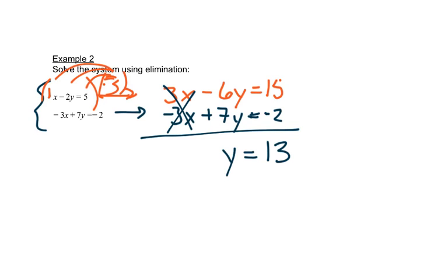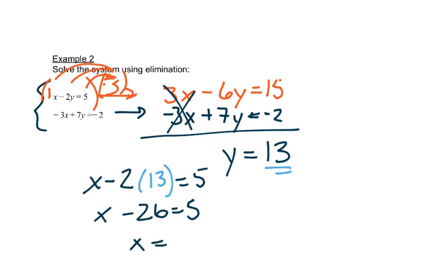So now I'm going to use that y equals 13 back in either one of my beginning equations. It looks to me like maybe the first one's a little bit easier. So I would have x minus 2 times 13 equals 5. So I'd have x minus 26 equals 5. Add 26 to both sides. And I have x equals 31.